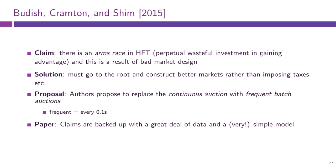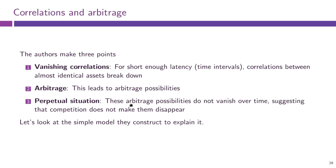They also propose a solution to this problem, saying that this arms race is baked into the continuous auction mechanism. So what they propose is to replace the continuous auction with frequent batch auctions — by frequent they mean really frequent, like 10 auctions a second. This should not create a significant delay for any traders who want to buy or sell stocks, but it should eliminate the problems that HFT can generate.